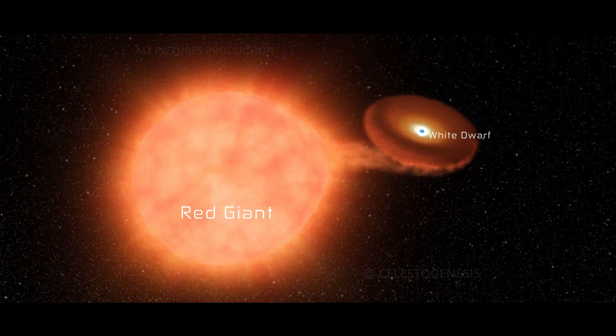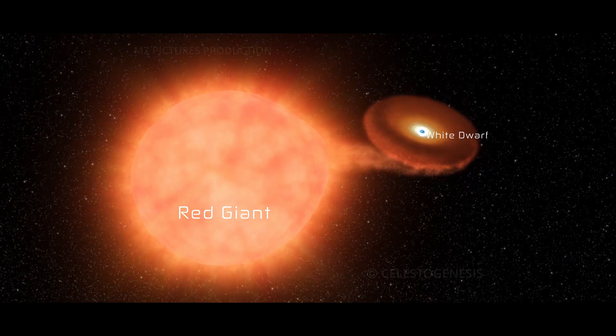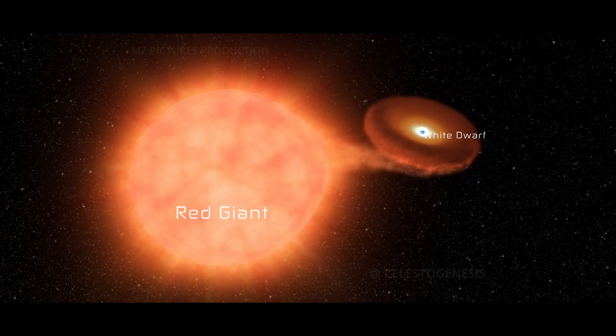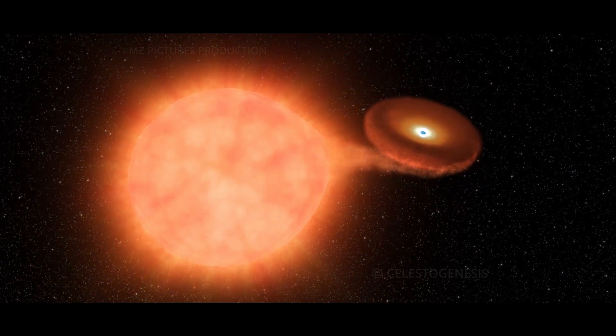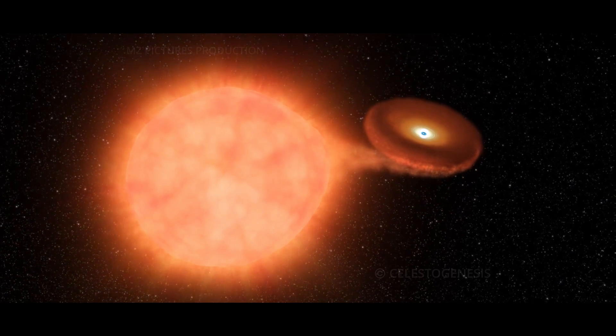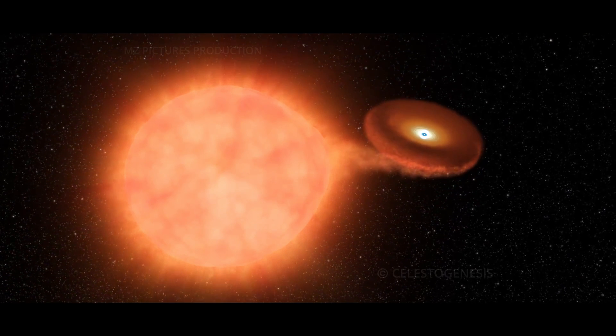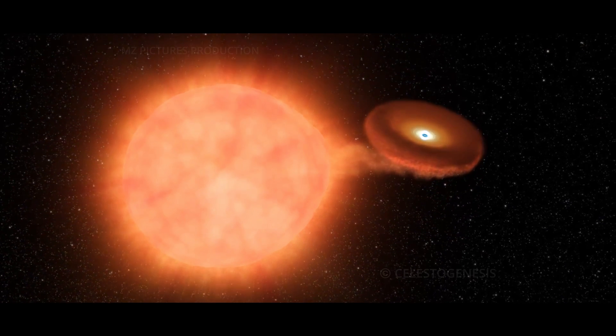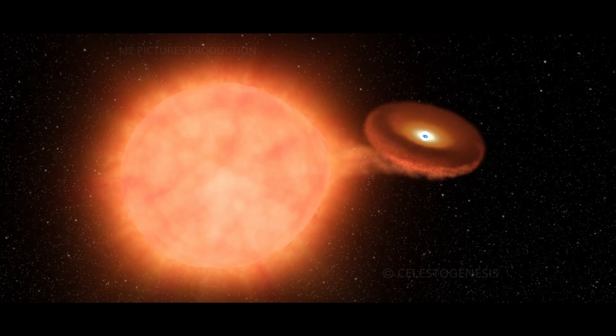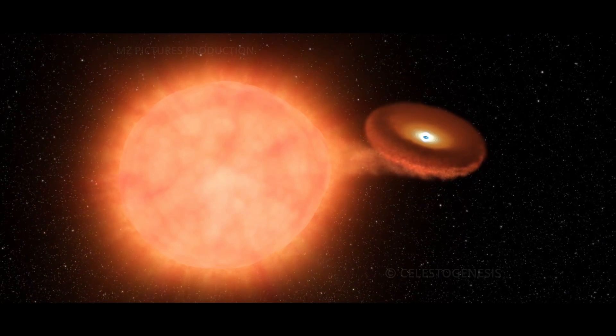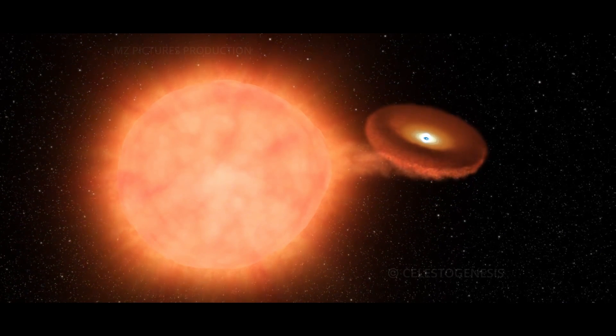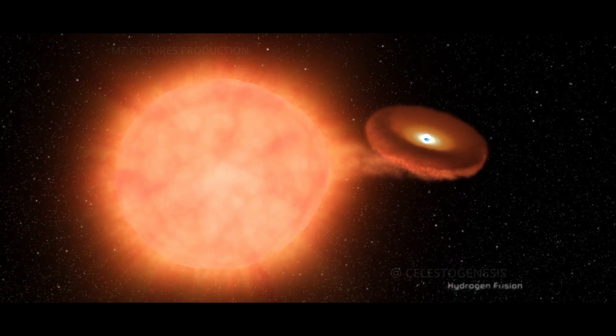The outer layer of the red giant, rich in hydrogen, creeps closer to the white dwarf. When it gets close enough, the white dwarf's gravity starts sucking in this hydrogen. This stolen hydrogen forms an atmosphere around the white dwarf, creating a volatile environment. As this hydrogen heats up, it kick-starts a process known as hydrogen fusion.